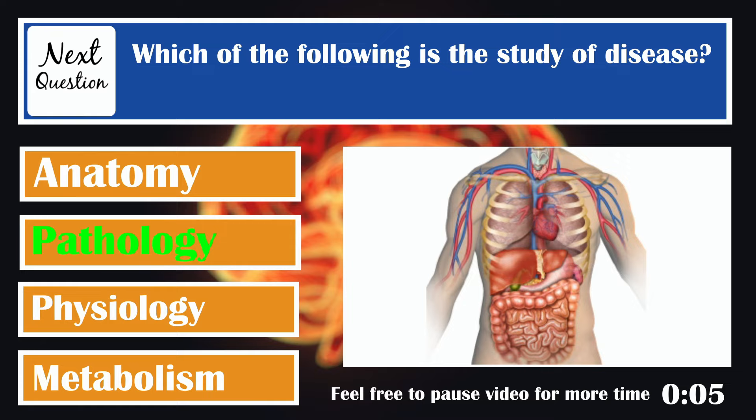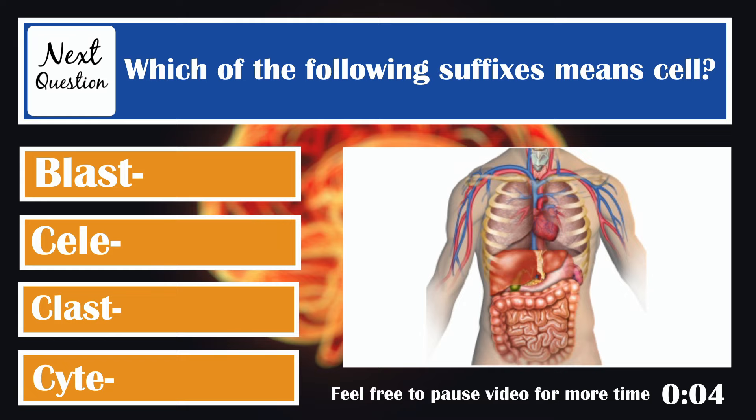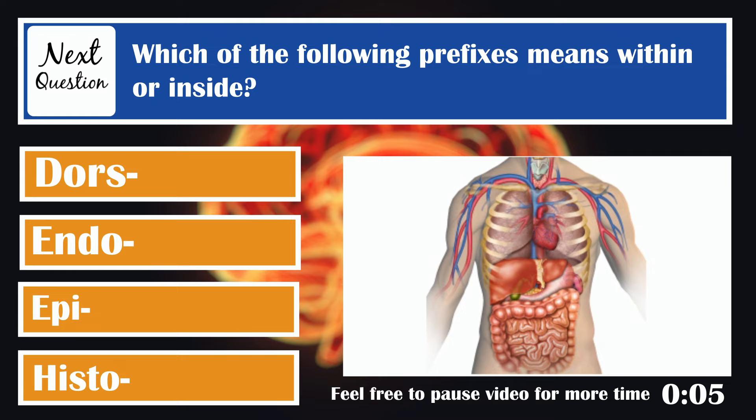Which of the following suffixes means cell? Cyte means cell, as in hemocyte or osteocyte. Which of the following prefixes means within or inside? Endo means within or inside, as in endometrium and endocardium.